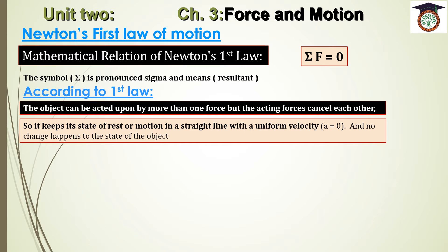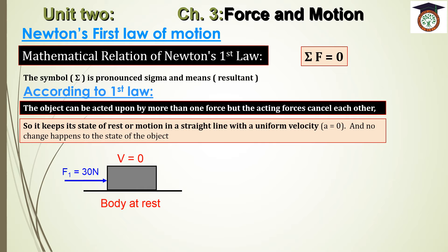If the object is at rest, its velocity equals zero so its acceleration equals zero. If the object moves with uniform velocity, there is no change in velocity, therefore acceleration also equals zero. For example, if a body is at rest with a force of 30 N from the left and 30 N from the right — equal in magnitude but opposite in direction — these two forces cancel each other and the object keeps its state of rest.